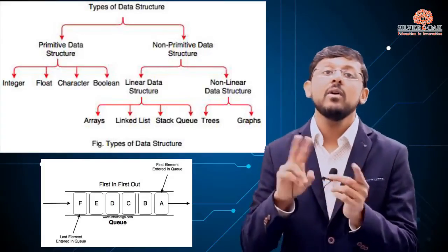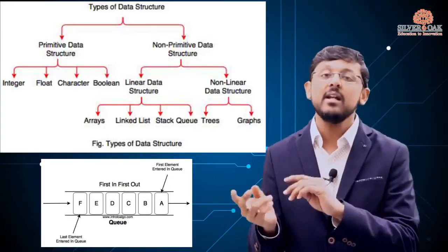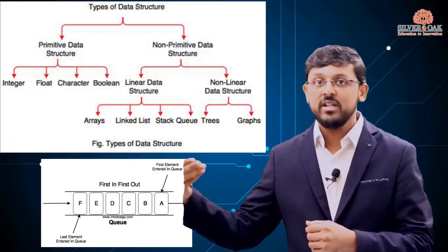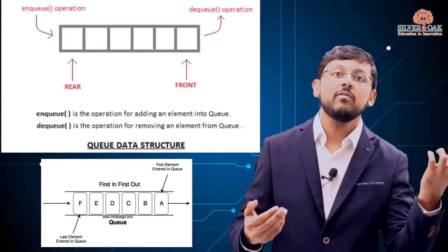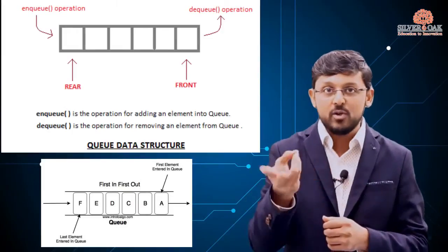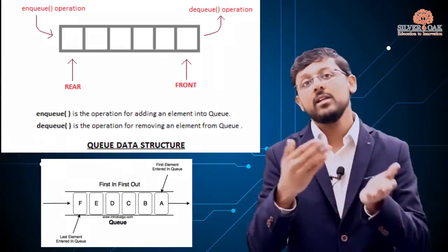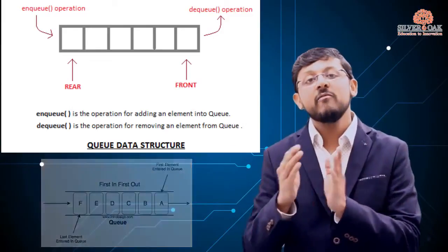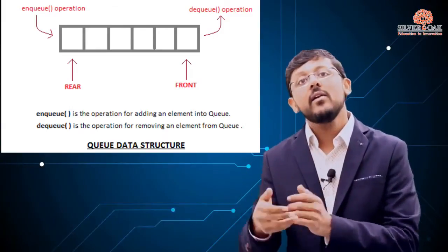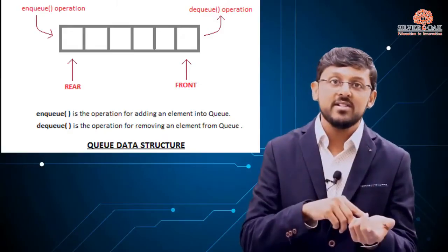In a queue, insertion happens from the rear end and deletion from the front end. Unlike stack, queue has two ends: front and rear. Insertion uses the rear end, and deletion uses the front end.